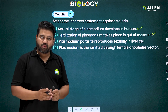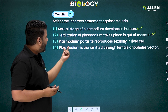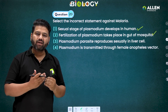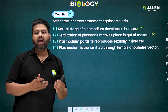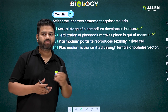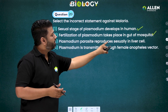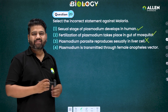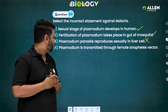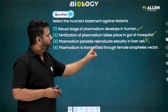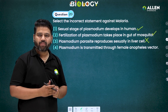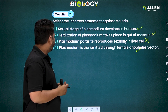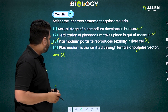The third statement says Plasmodium parasite reproduces sexually in liver cells. However, as discussed, in both RBCs and liver cells, asexual reproduction takes place. This statement incorrectly claims sexual reproduction occurs there, so it is incorrect. The fourth statement — that Plasmodium is transmitted through the female Anopheles vector — is absolutely correct. The incorrect statement is option number 3, which is the answer to question 23.